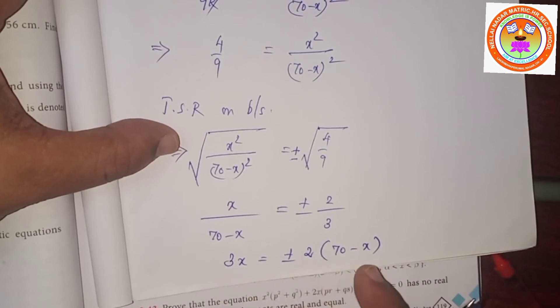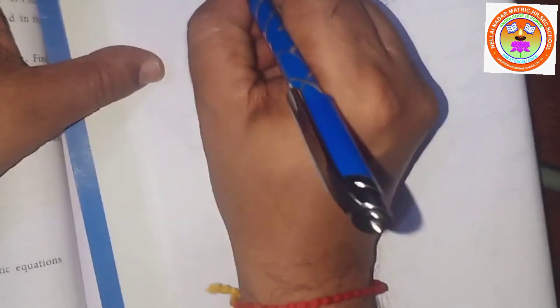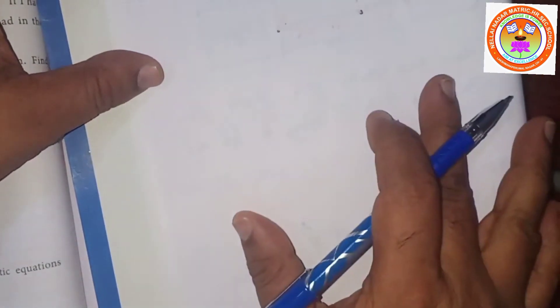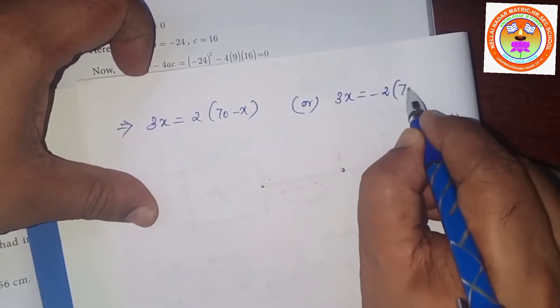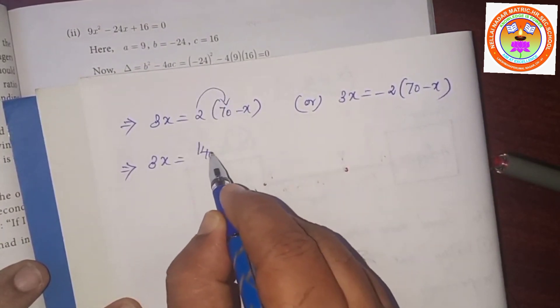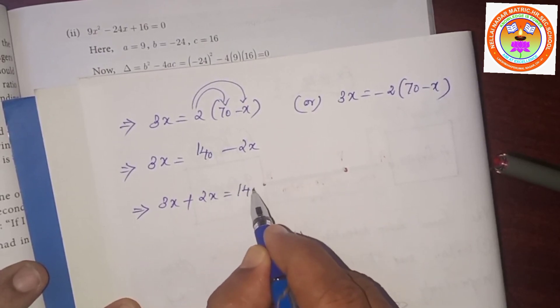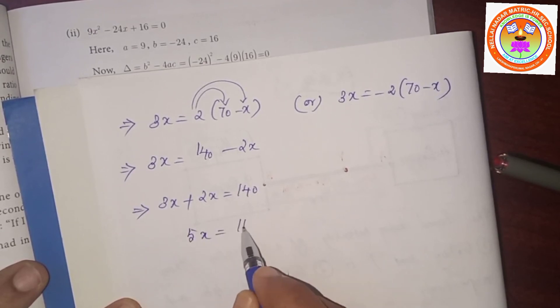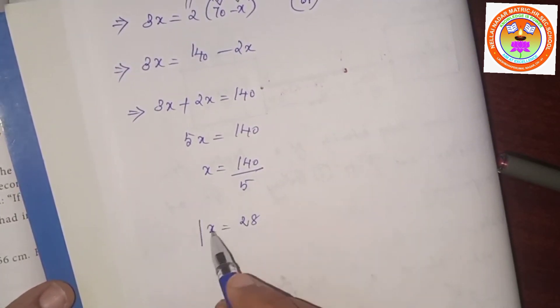Cross multiplying: 3x equals plus or minus 2 times (70 minus x). Case 1: 3x equals plus 2(70 minus x), giving 3x equals 140 minus 2x, so 5x equals 140, therefore x equals 28.